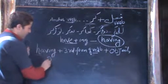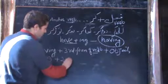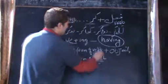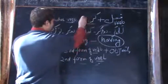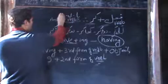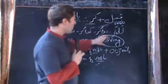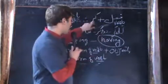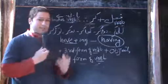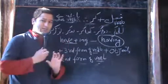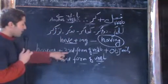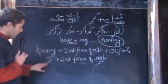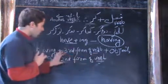After 'having' and the third form of verb, we use the object, then a comma. After the comma, we translate the next part of the sentence: first the subject, then the second form of the verb. So the sentence ends at 'Ya', 'Yi', or 'Ye'. For such sentences, we always start with 'having', then the third form of verb in translation, then the object, then the next part with the subject — or if there is no subject, we start after the punctuation mark.